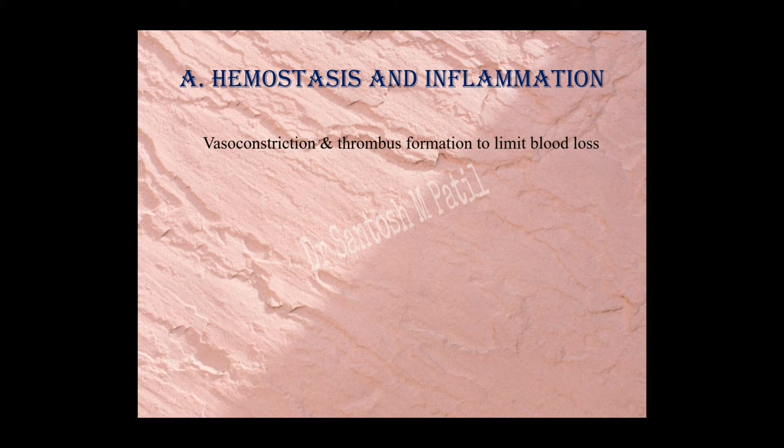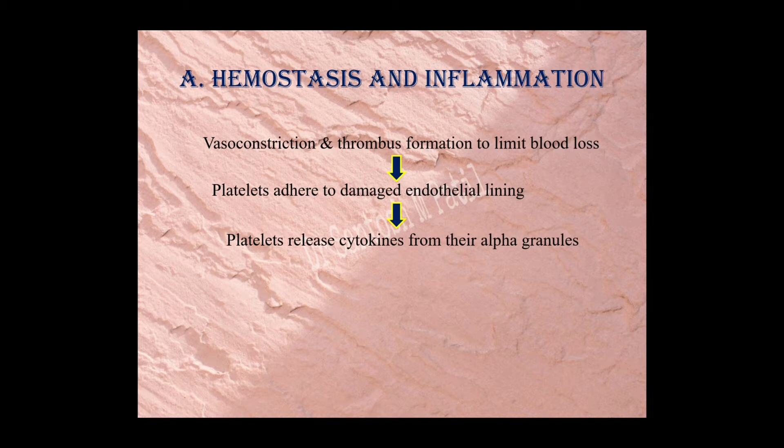Discussing hemostasis and inflammation in detail: whenever there is an injury, vasoconstriction and thrombus formation occur to limit further blood loss. This thrombus is mainly because of platelets that adhere to the damaged endothelium. Platelets release certain cytokines — platelet-derived growth factor, platelet factor 4, and transforming growth factor beta — all released mainly from the alpha granules of the platelets. The function of these cytokines is mainly to attract inflammatory cells, which are neutrophils and macrophages.